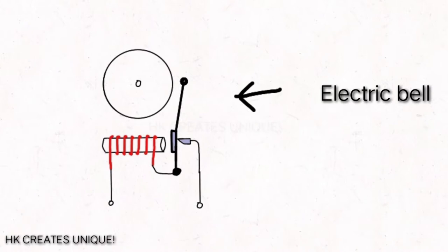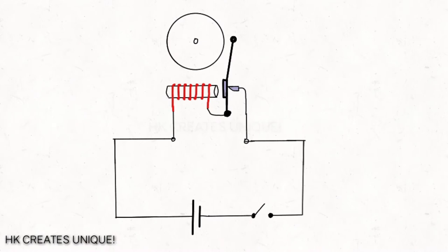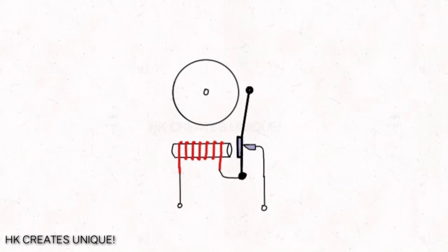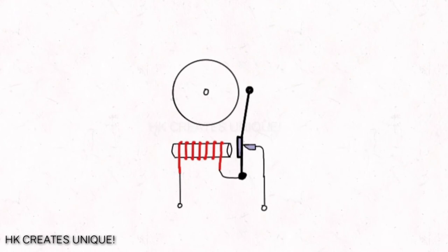An electric bell is a mechanical device that creates a continuous ringing sound when electricity is given. In this video I am going to explain how an electric bell works. Let's get started. In an electric bell there is a gong.